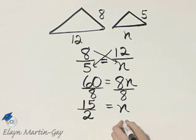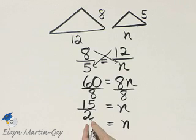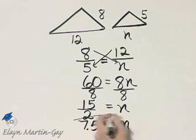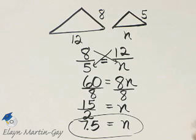There are many ways you can write this. You can write it as a mixed number. As a mixed number, it'd be 7 and 1/2 units. Or we can write it as a decimal. As a decimal, it'd be 7.5 units. But that is the length of this side of this one similar triangle.